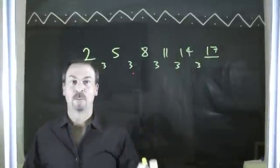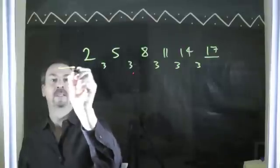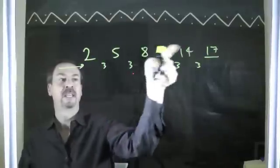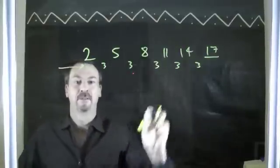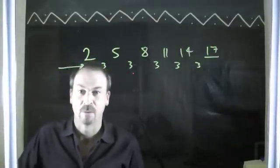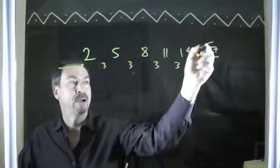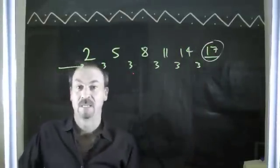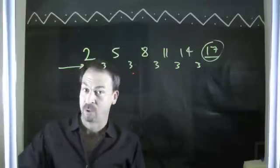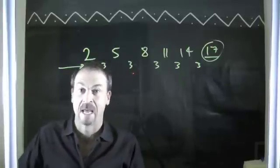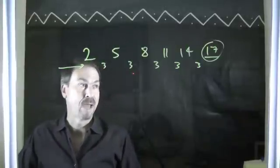So what we notice here is that we took the differences — the first differences of the sequence — we've got a constant value, a constant value of 3. And that helped us figure out the final value should be 17 if we're choosing to play the game 'Let's Believe in Patterns.'